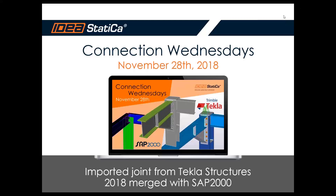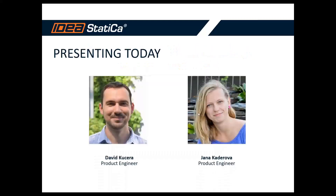Welcome to another Connection Wednesdays. Today we will present quite an interesting topic: since October 2018 when we released version 9.1 of IDEA StatiCa, we have a new application called Code Check Manager, and this is what we will focus on today. We will show you a very nice example of how to import a connection from Tekla Structures and merge it with a model from SAP 2000.